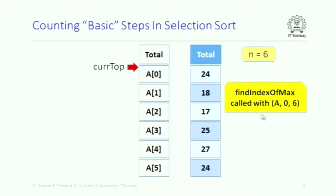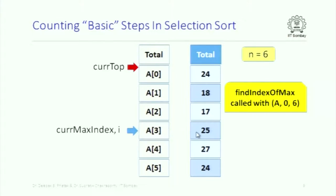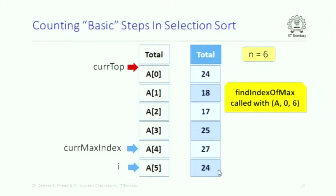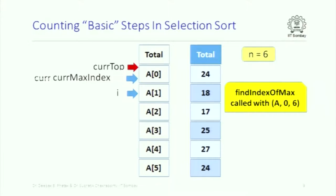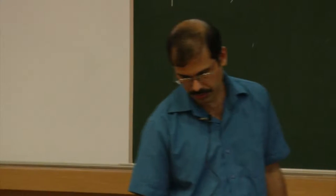That is the call find_index_of_max, array a, starting position 0, total 6 elements. When we execute find_index_of_max, we start with current_max_index and i at 0. We take one step: increment i and check whether 18 is greater than 24 — it is not, so current_max_index stays. Second step: is 17 greater than 24? No. Then 25 is greater than 24 so current_max_index gets updated, then 27 is greater than 25 so it updates again, and finally 24 is not greater than 27. So how many steps did we take? Five steps, each involving reading an array element, comparing, and updating — a fixed amount per step.